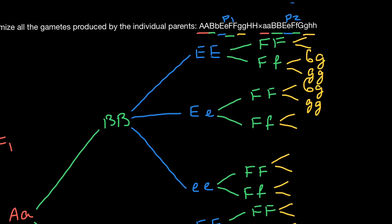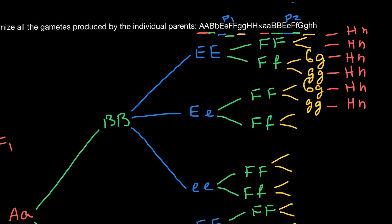As for the last allelic pair — gene H — parent one is homozygous dominant and parent two is homozygous recessive. That means this does not increase the number of combinations, and each genotype is going to be heterozygous for this gene: capital H and small h. So every genotype will be heterozygous — I'm not going to add this allelic pair to each genotype, since it doesn't increase the number of combinations.